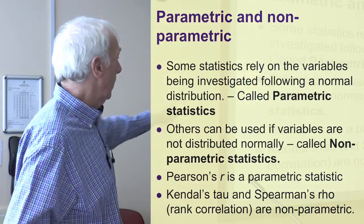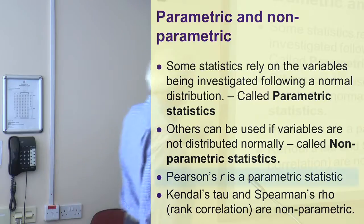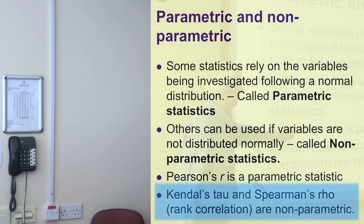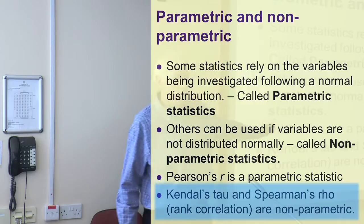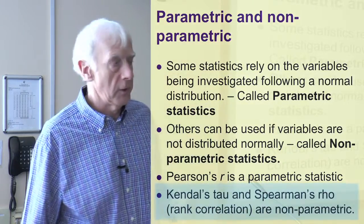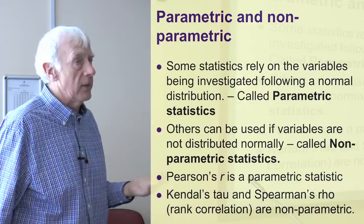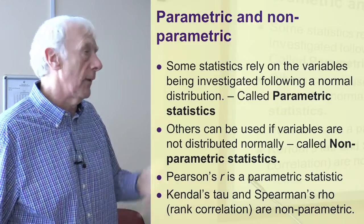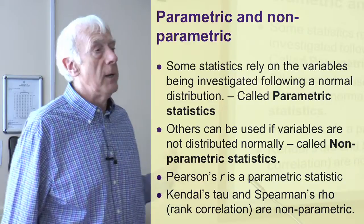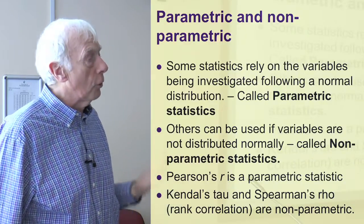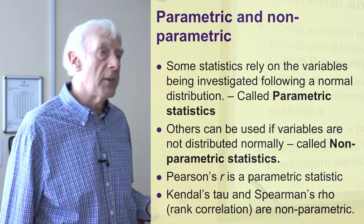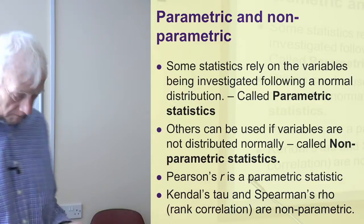The equivalent of Pearson's R, which is the parametric one, is either Kendall's tau or Spearman's rho. I'll show you Spearman's rho. Spearman's rho is almost exactly the same in terms of how you do it as Pearson's R — same interpretation and so on — but it's a slightly more cautious statistic. It gives you a slightly lower significance level when you do it.